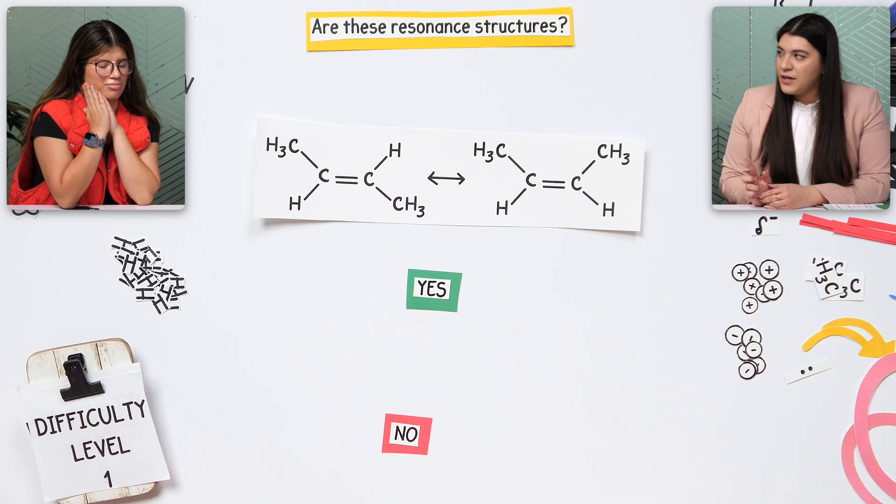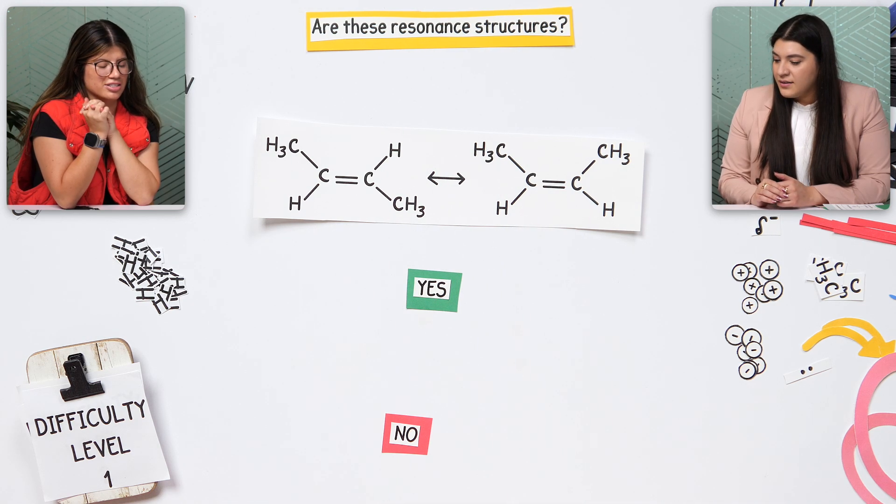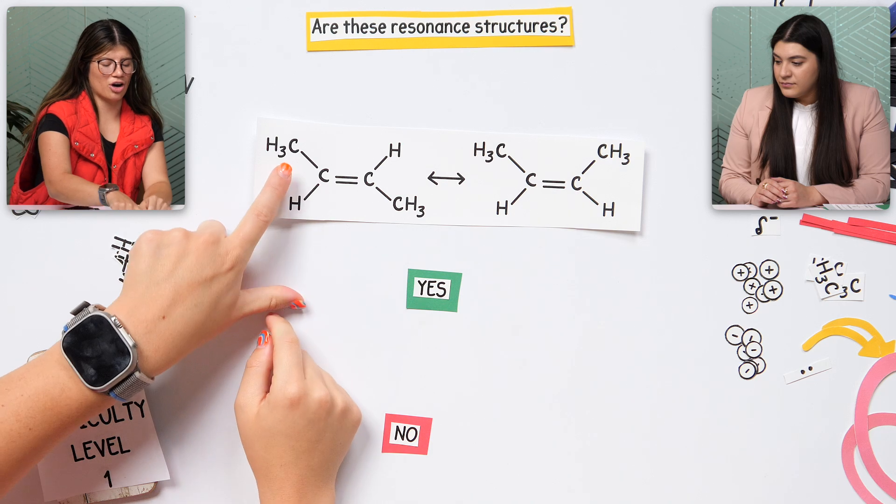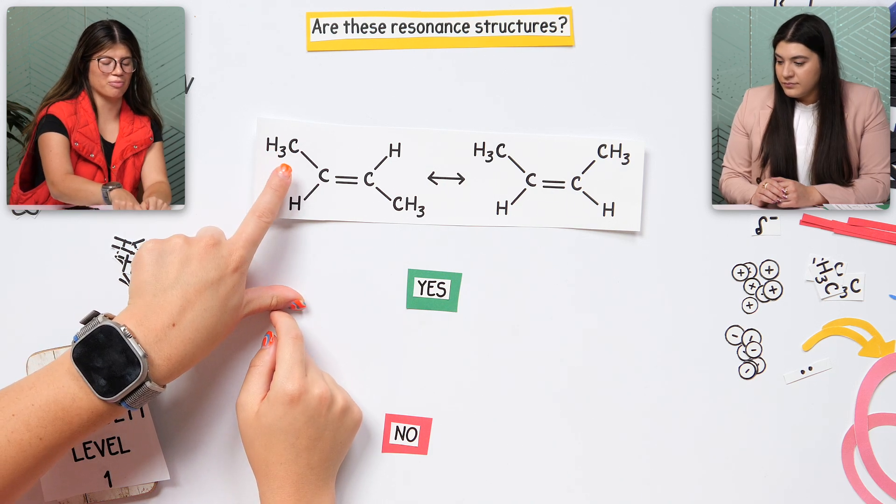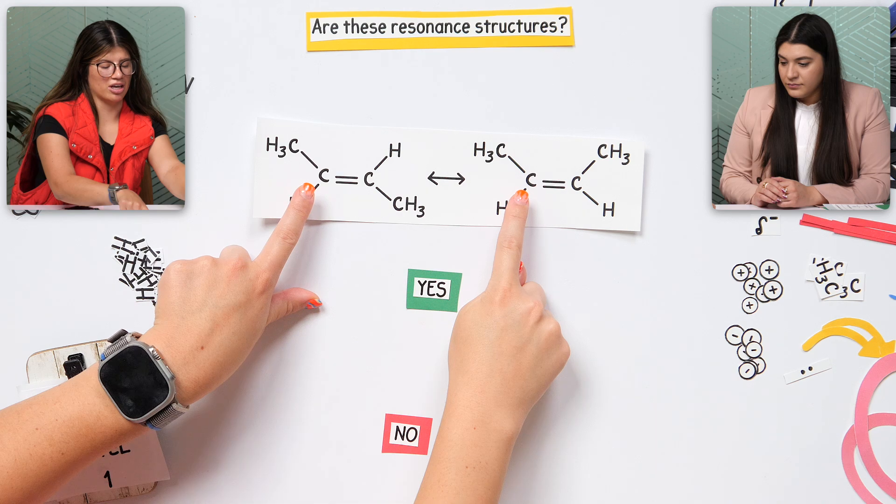Did electrons move? How do we know electrons moved? Because there's still the carbon with the three hydrogen bonded to that carbon, and then on this side, same thing.